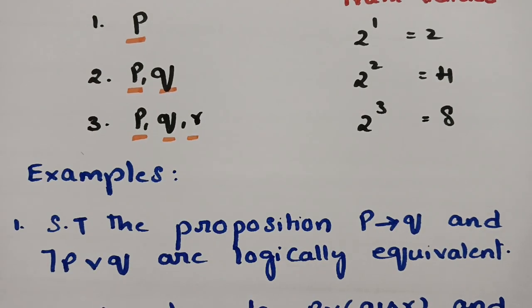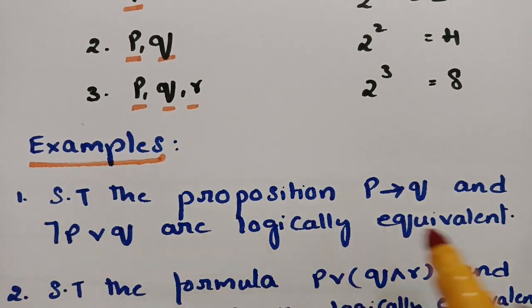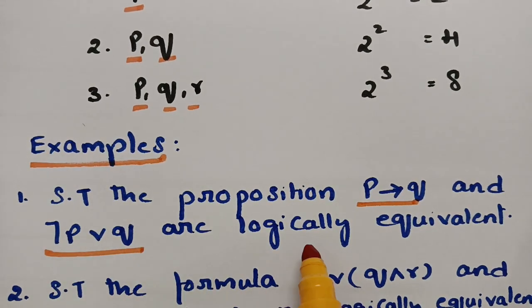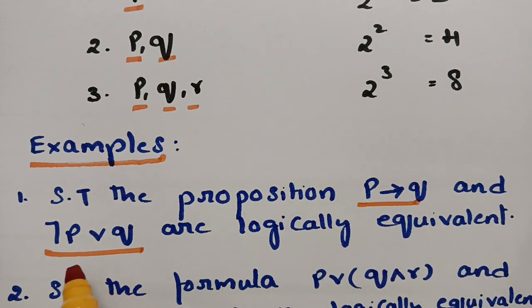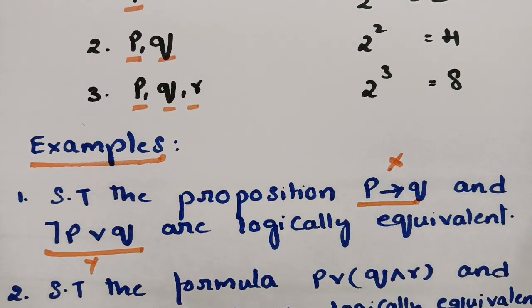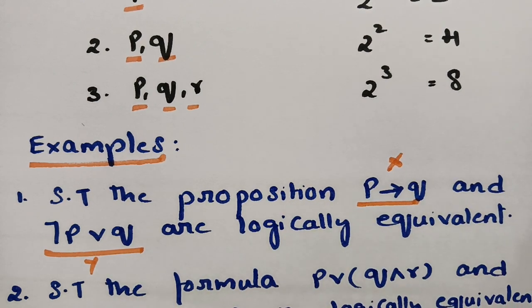For example, we have to show that p implies q and negation p or q are logically equivalent. We take p implies q as x and negation p or q as y, then draw the truth table and show that the last columns are equal. If they are equal, then x and y are logically equivalent.